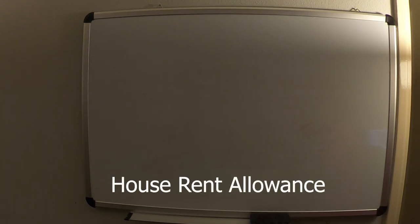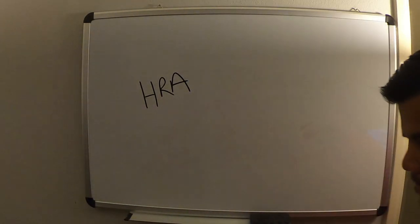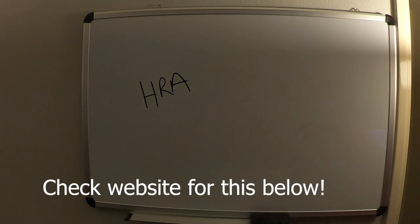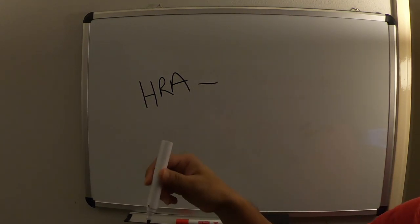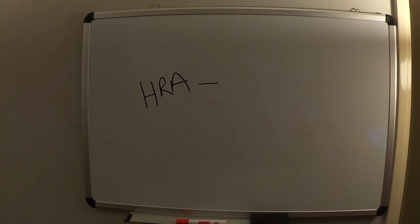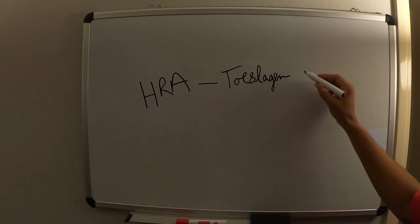Let's start with house rent allowance. First, you need to know the website that you generally use for applying for any sort of allowance. Before that, I want to introduce something about the tax authorities. I'll enclose the website link below so you can find it — the popular name is 'Belastingdienst.'